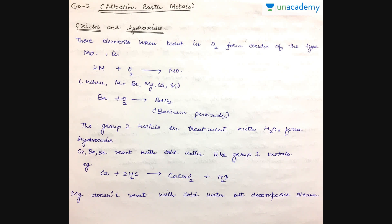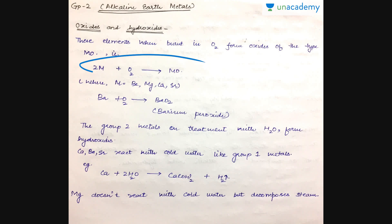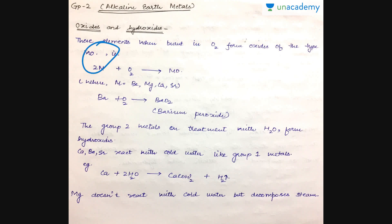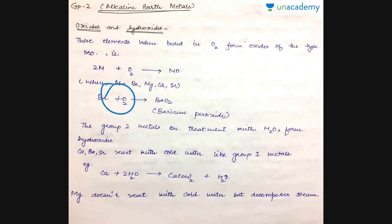Moving on to the first category of compounds — oxides and hydroxides. Whenever these metals are burnt in excess supply of oxygen, they form oxides of the type MO. The general formula for the oxides of group 2 metals is MO, where M is magnesium, beryllium, calcium, and strontium. Barium, when reacted with oxygen, forms BaO2, that is barium peroxide, because the larger barium ion can easily stabilize a peroxide ion.